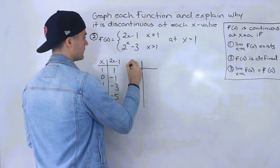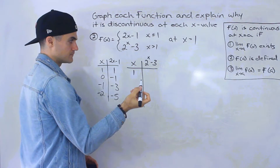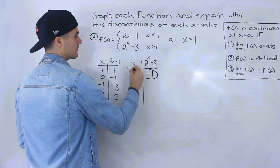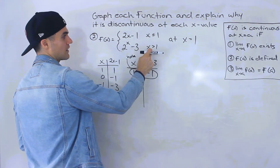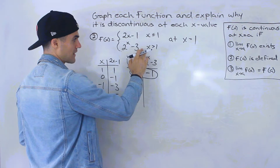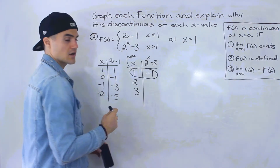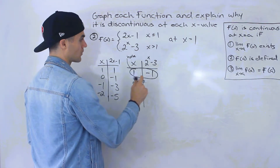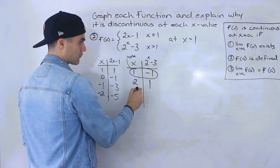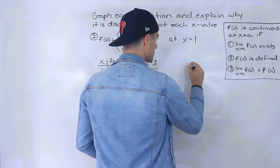For the other piece, two to the power of x minus three — this is when x is greater than one. I'll still put x equals one in the table; plugging in one gives two to the one minus three equals negative one, but this point is a hole because it's not defined there. We still include it to see what's happening around it. For x equals two: two squared is four minus three equals one. For x equals three: two cubed is eight minus three equals five. So with these tables, I'll make a graph.